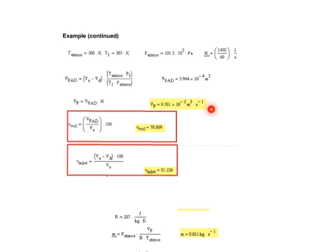The next two boxes are calculating the volumetric efficiencies. First, volumetric efficiency at FAD conditions, which gives us 78.869%. Second, volumetric efficiency at inlet conditions, which gives us 81.226%.